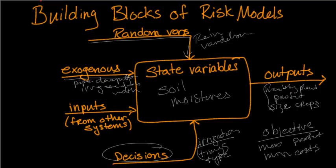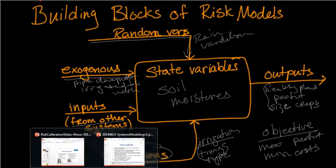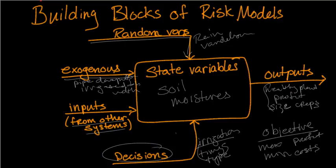The inputs, there are other inputs that affect this. And they might be inputs that we don't have control over. They're the ones that come from other systems. So this might be the runoff from upstream systems from other farms and things like that.